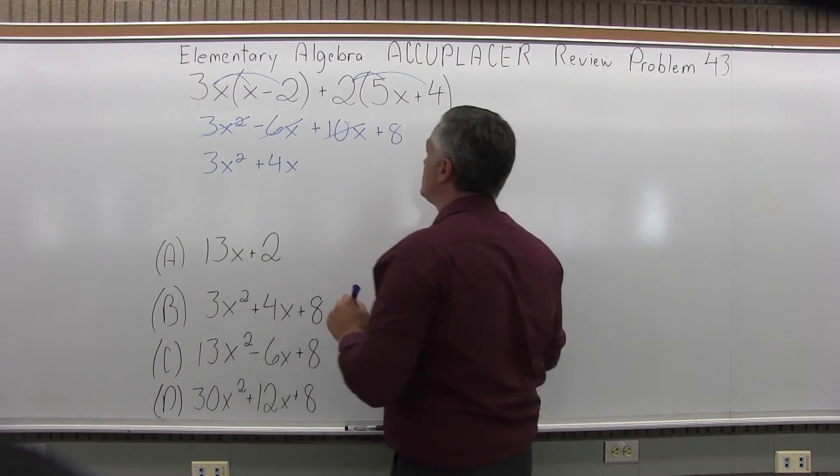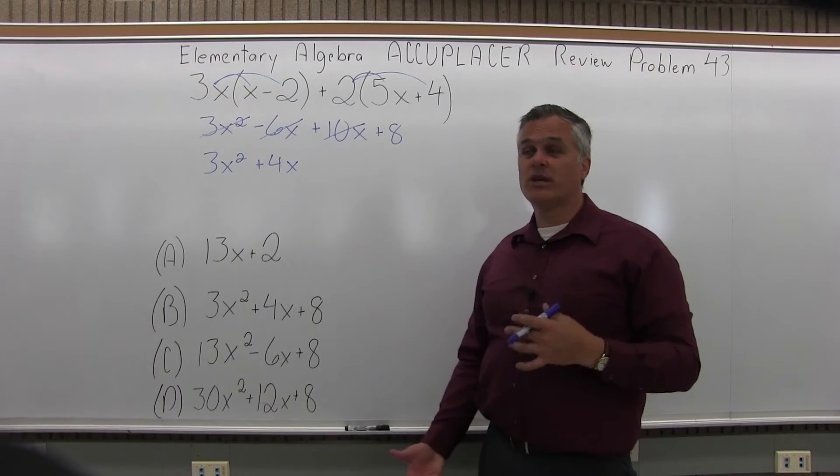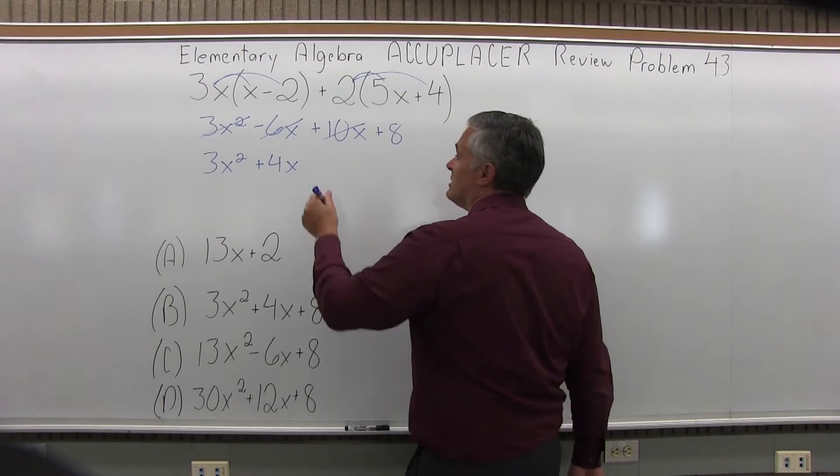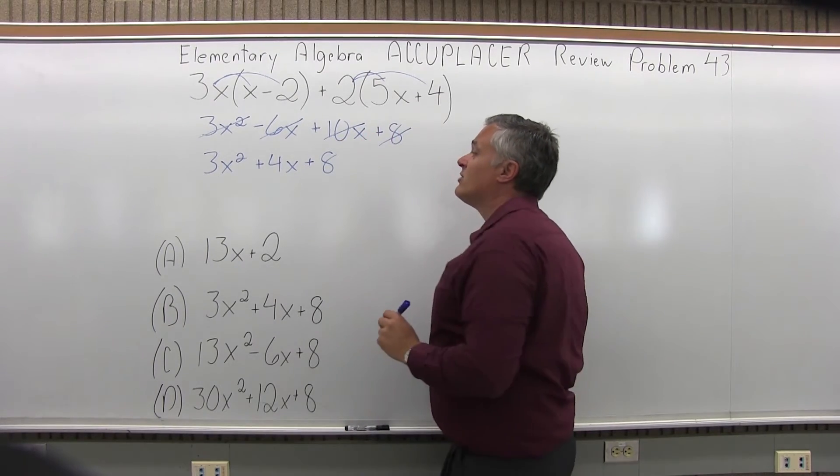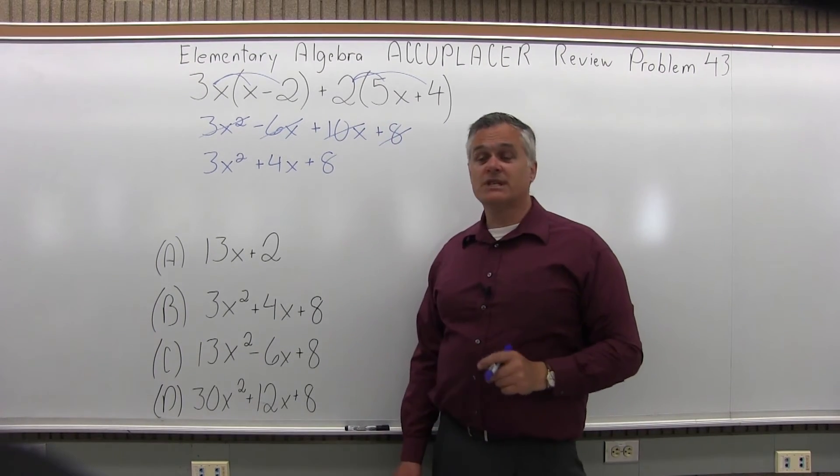And the last piece is just the number of the 8 with no x. There are no other plain numbers to be combined with it, so it will just come down into my answer. And I get 3x squared plus 4x plus 8.